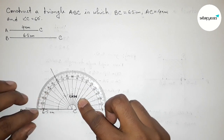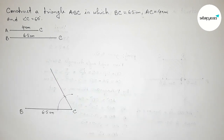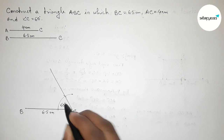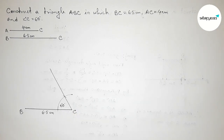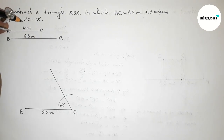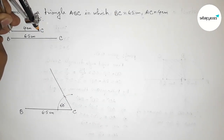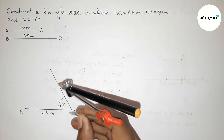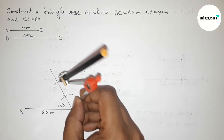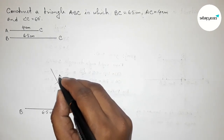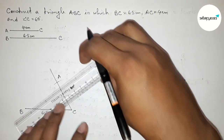Angle C equals 60 degrees. Next, taking AC equals 4 centimeter with the help of compass. Putting the compass here and taking 4 centimeter, then putting the compass on point C and cutting the arc. Now taking here point A.